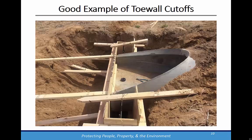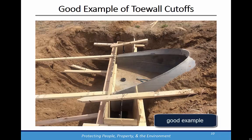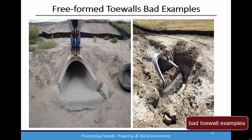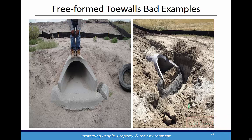This is a good example of a neat lined trench at the downstream end of the flared end section. The contractor has set forms for the exposed toe wall sections adjacent to the flared end section. Free-form cut-off walls are not acceptable for reasons shown in these two photos. Here, the required widths and depths were not obtained and the contractor was required to remove and replace the toe walls.